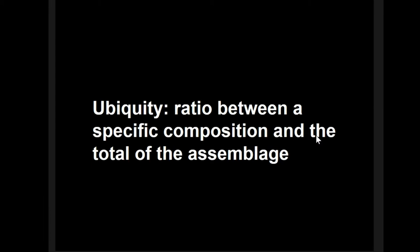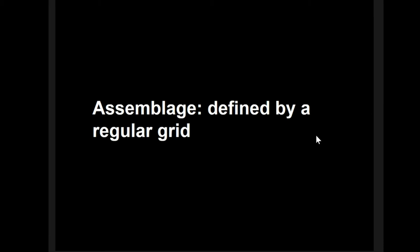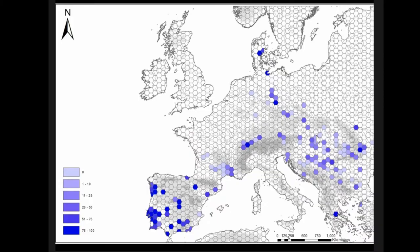Ubiquity analysis calculates the percentage of objects that have a specific composition with respect to the total assemblage. Of course, we can't use the total assemblage because then Europe would just be one grey colour. The trick is to create sub-assemblages and see the differences in percentage across them — in this case, sub-assemblages defined by geography. To create these, I need to define a grid. The easiest example was using regular grids: hexagons with 15 kilometres of side.